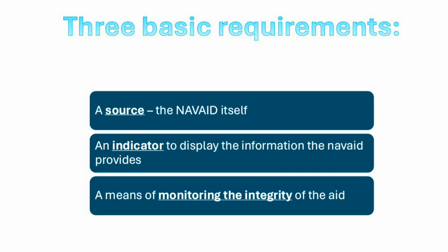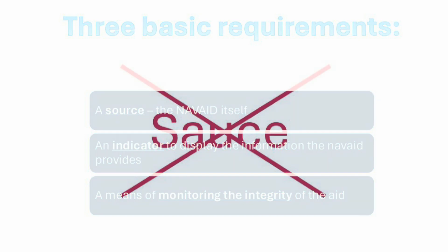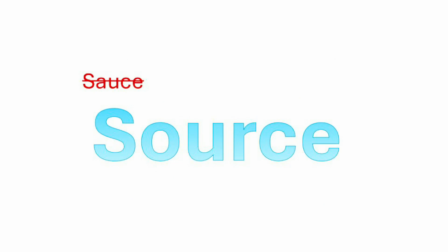We also need a means of monitoring the integrity of the aid. What that is, is a way of telling us if the aid has actually fallen over or ceased working for whatever reason — we need to know about it so that we're not trying to follow information that's incorrect. So the first one we'll go and have a look at are a couple of different types of sources, or the NAVAIDs themselves.